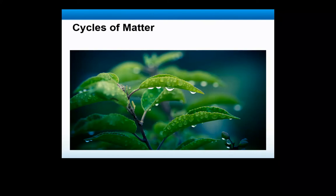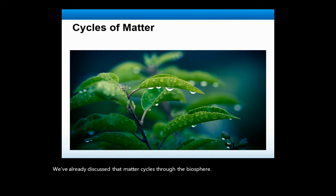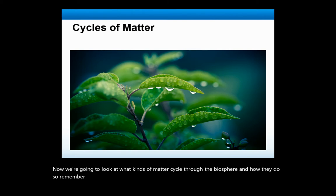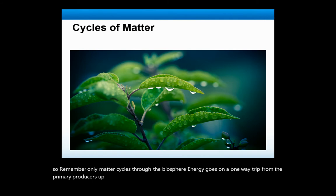We've already discussed that matter cycles through the biosphere. Now we're going to look at what kinds of matter cycle through the biosphere and how they do so. Remember, only matter cycles through the biosphere. Energy goes on a one-way trip from the primary producers up through higher trophic levels.